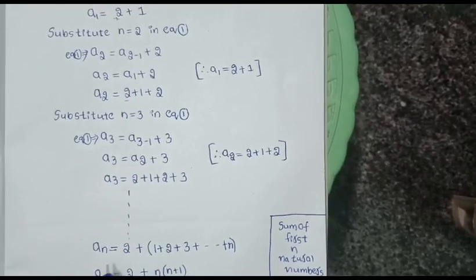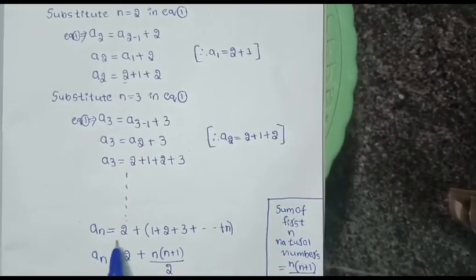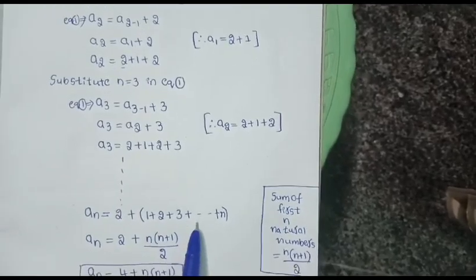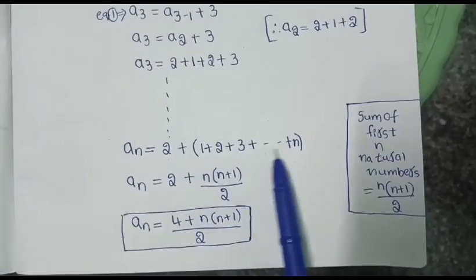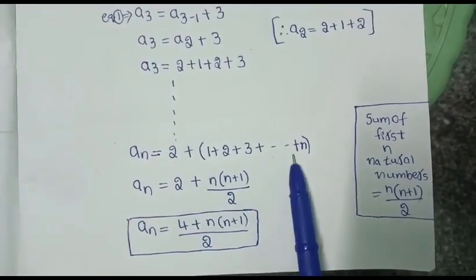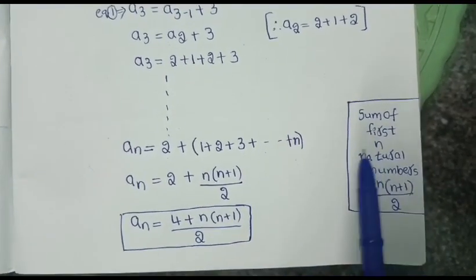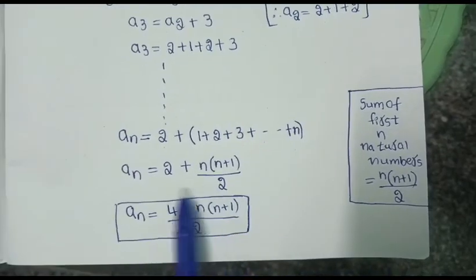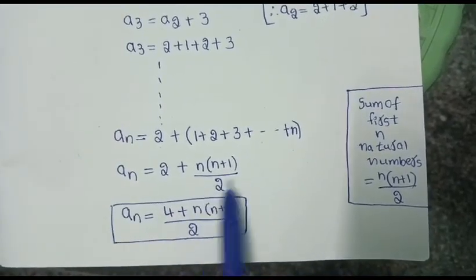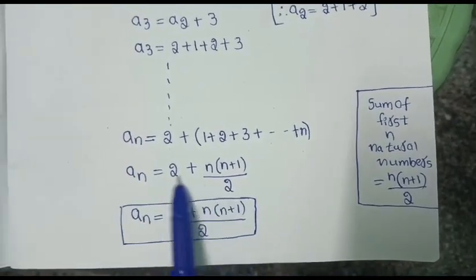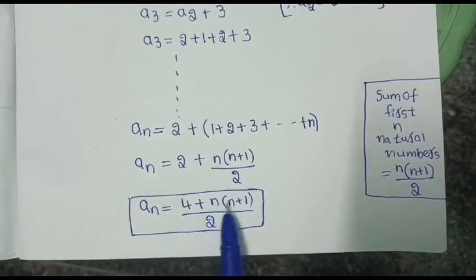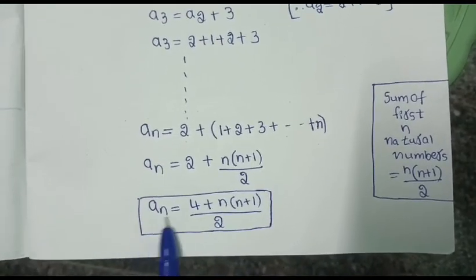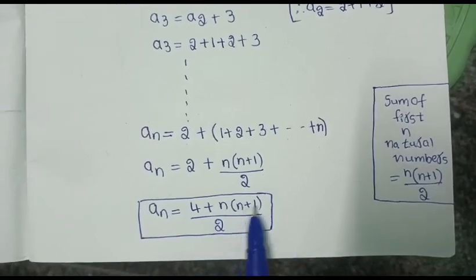Continuing up to n, we get a_n = 2 + 1 + 2 + 3 + ... + n. The sum 1 + 2 + ... + n is the sum of the first n natural numbers, which equals n(n+1)/2. Taking the LCM as 2, we get a_n = (4 + n(n+1)) / 2.